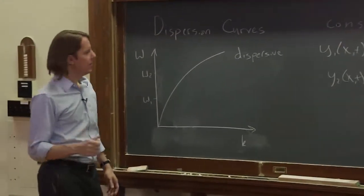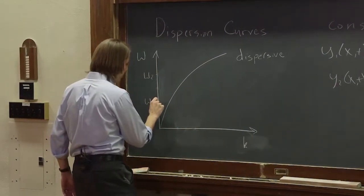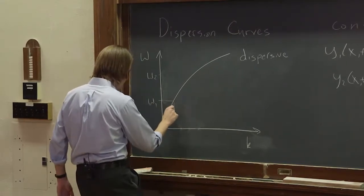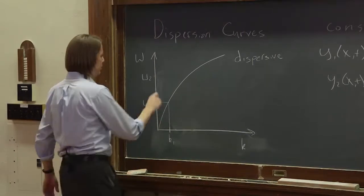And the key here is that if we think about their velocities, then let's see, omega 1 we can draw across and down. And there's k1. That ratio would be the speed.